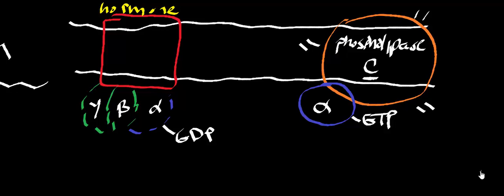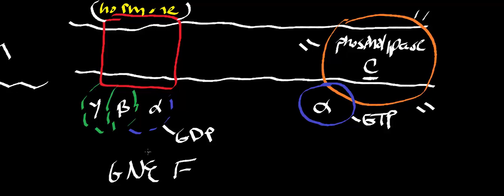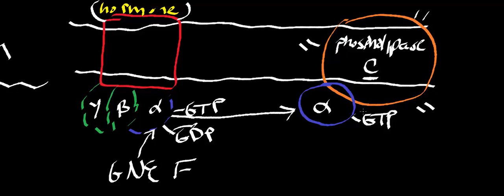The mechanisms up until the activation of phospholipase C are identical to what we saw before. We have an adrenergic receptor, a hormone bound to the receptor, and a guanosine nucleotide exchange factor that catalyzes the loss of GDP and pickup of GTP at the alpha subunit. Then the alpha subunit translocates along the membrane and, with bound GTP, activates phospholipase C in an identical manner to how it activated adenylate cyclase.